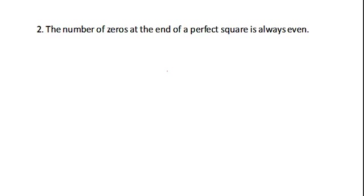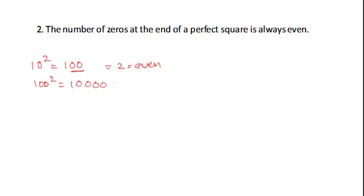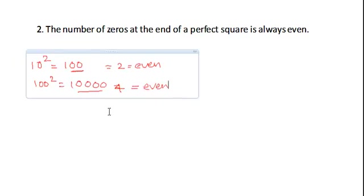The second property is that the number of zeros at the end of a square number is always even. For example, 10 squared equals 100, which has 2 zeros — an even number. 100 squared equals 10,000, which has 4 zeros — also an even number. So, the number of zeros at the end of a perfect square is always even.